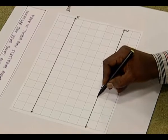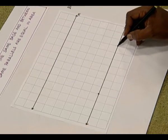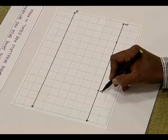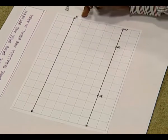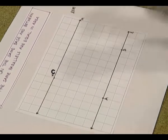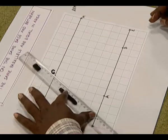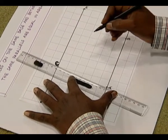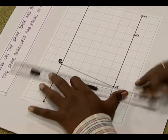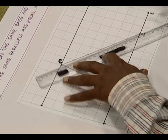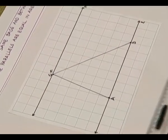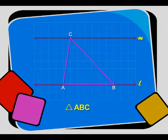Now we draw one triangle. I want to take two points on line L. Here I will take a point here and a point here, and I name them as A and B. And for the third point, I take a point on line M. We take this as C. Now we draw triangle ABC in between two parallel lines L and M.